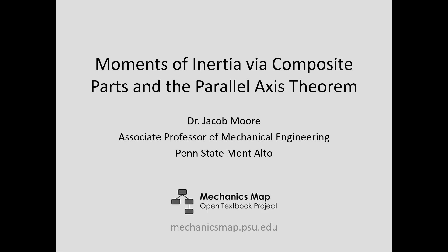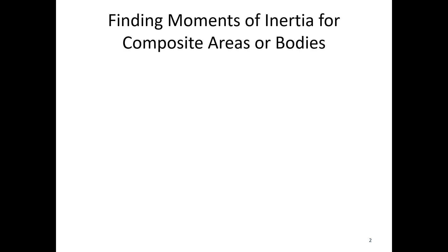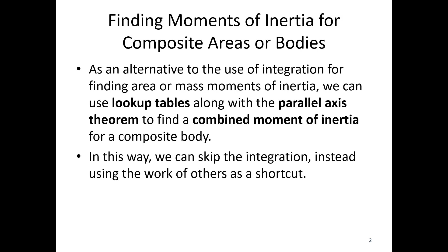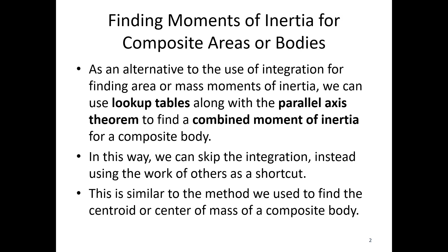Hello, everyone. For today's video lecture, we're going to be talking about moments of inertia via composite parts and the parallel axis theorem. As an alternative to the use of integration for finding the area or mass moments of inertia, we can use lookup tables, along with the parallel axis theorem, to find a combined moment of inertia for any composite body. In this way, we can skip the integration, instead using the works of others as a shortcut. This is similar to how we found the centroid or center of mass via composite bodies.